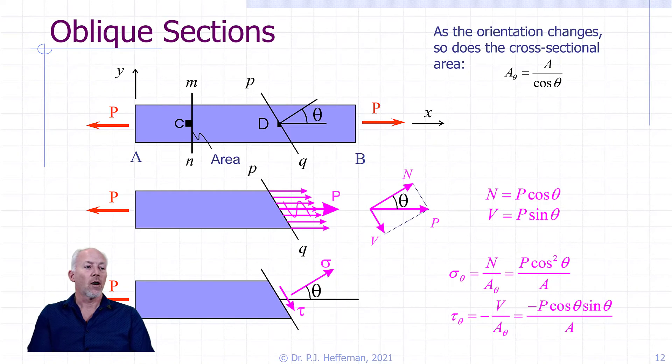So our normal stress at a different orientation angle theta is equal to p cos squared theta divided by A - that's the original area. And tau theta is equal to the negative of p cos theta sin theta divided by that original area, A.